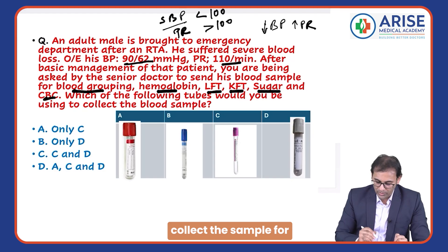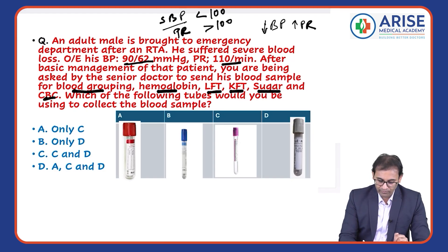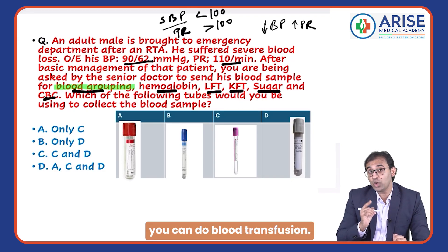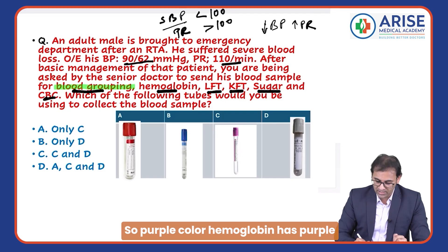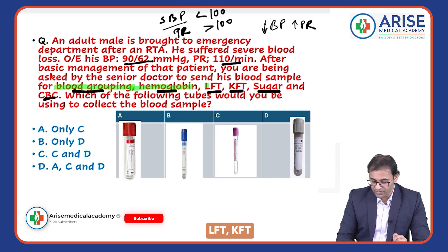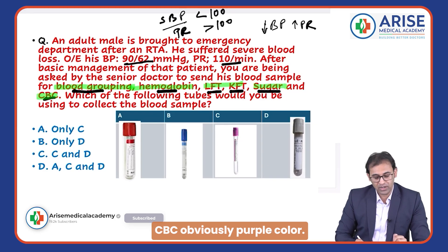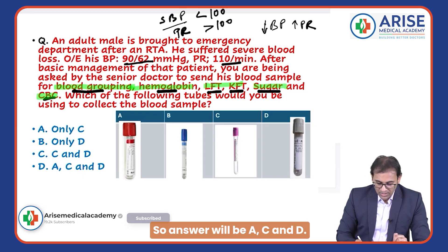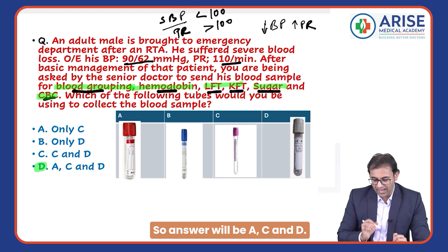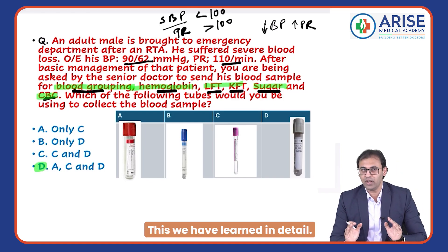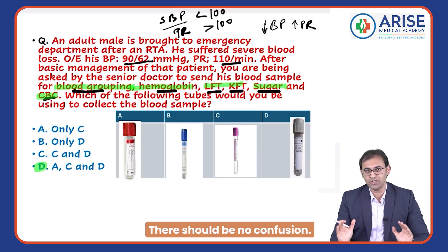When you collect the sample for blood grouping — so you can do blood transfusion — use the purple tube. Hemoglobin: purple tube. LFT and KFT: red tube. Sugar: gray tube. CBC: obviously purple tube. So the answer will be A, C, and D. We have learned this in detail — there should be no confusion.